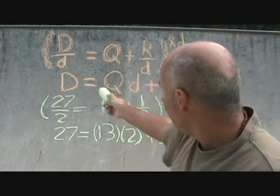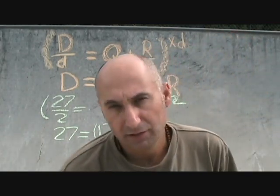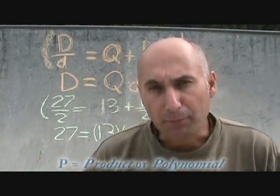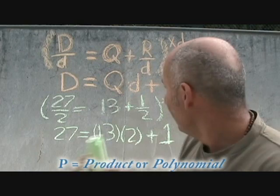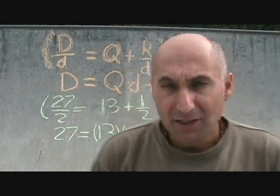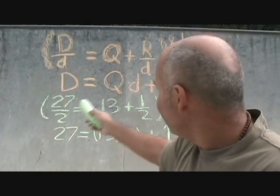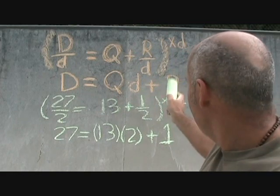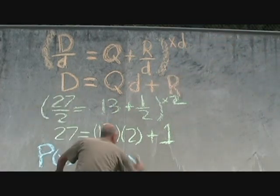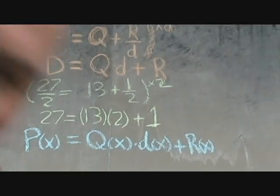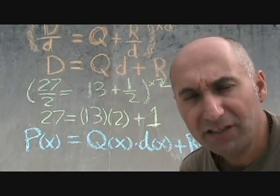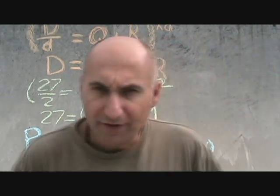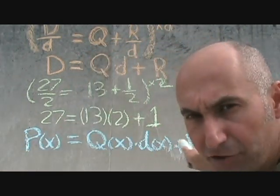We've got two different types of Ds, and I personally don't like that. So we're going to call big D a P, which represents the product. And because we're going to start talking about functions, we're going to call them P(x) is equal to Q(x) times D(x) plus R(x). So in our division statement when we start dealing with polynomials, P of X is equal to Q of X times D of X plus R of X, and all of these guys are going to be functions.